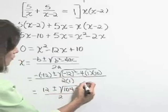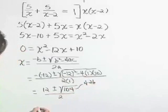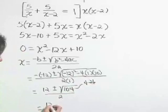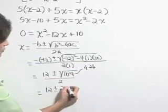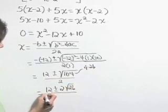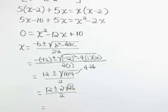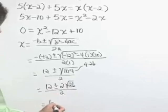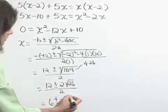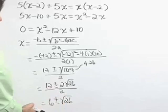That 104 is 4 times 26. So let's simplify that a little bit and write this as 12 plus or minus the square root of 4 is 2. That comes out, 26 stays underneath. Lastly, let's simplify by dividing that 2 into both terms and writing this as 6 plus or minus the square root of 26.